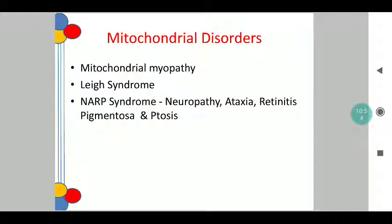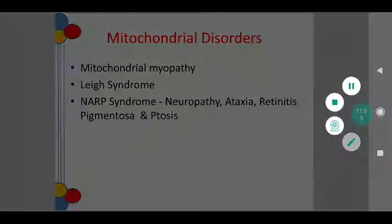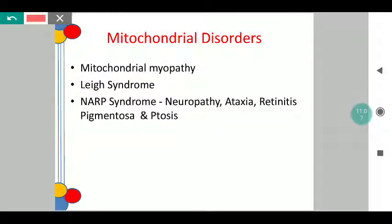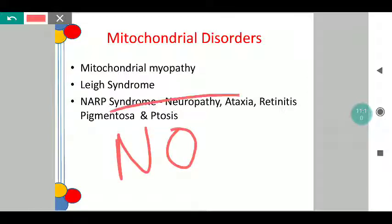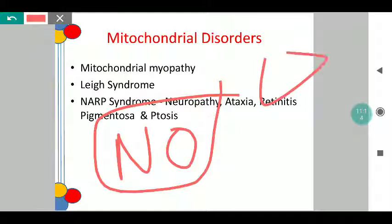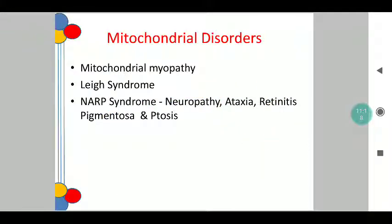Coming to the mitochondrial disorders — to name just a few: mitochondrial myopathy, Leigh's syndrome, and NARP syndrome, which is neuropathy, ataxia, retinitis pigmentosa, and ptosis. For completion's sake, mitochondrial disorders are mentioned, but there is no role for nutrition in mitochondrial disorders — the only and only treatment is a liver transplant.